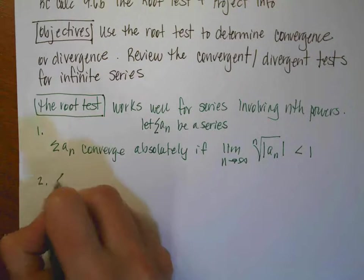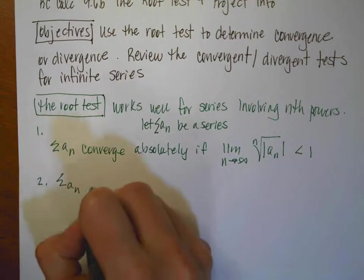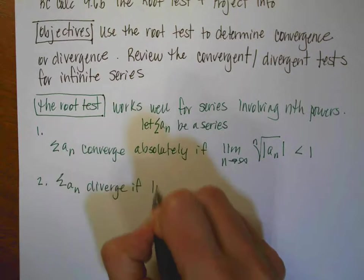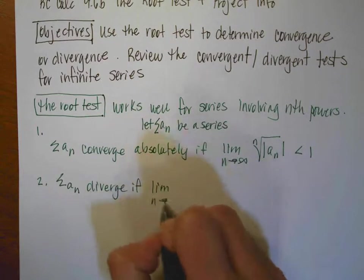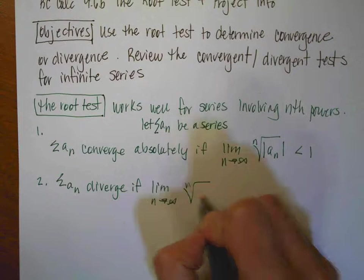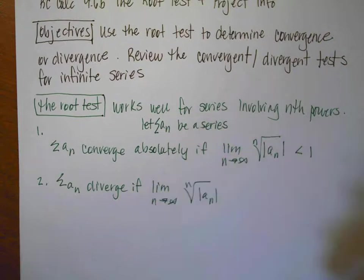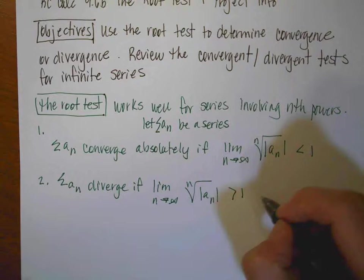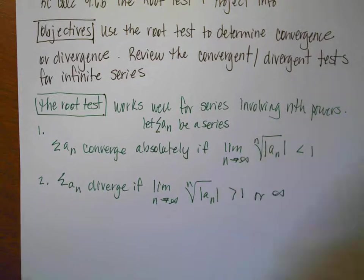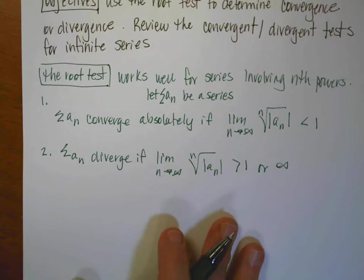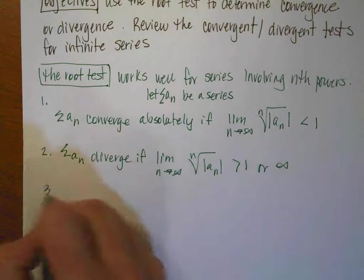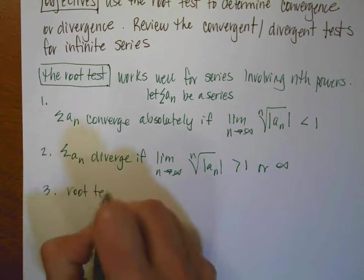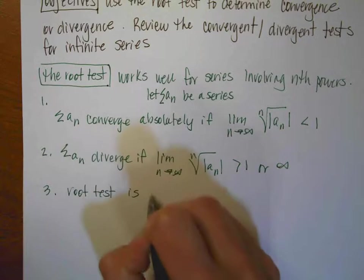Number 2: our series is going to diverge if the limit as n approaches infinity of the nth root of the absolute value of a sub n is greater than 1, or if it approaches infinity. So it could be either one of those situations. And then number 3: the root test is inconclusive